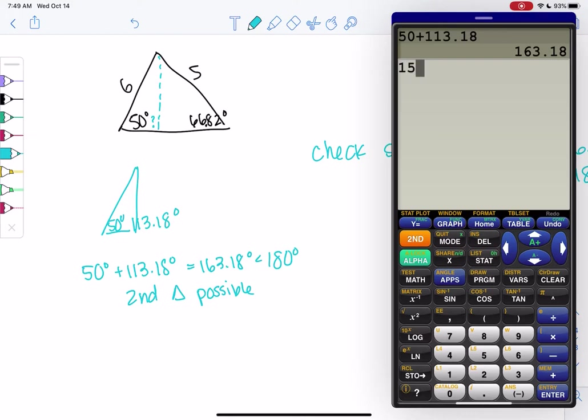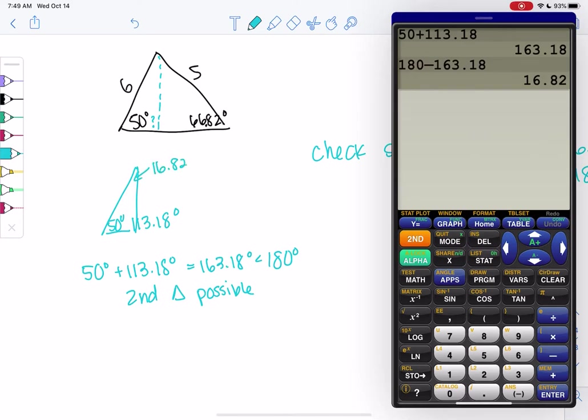And that second angle would, the third angle would be, we might as well just find it while we're here, is 16.82. So in the next example, or one of the next coming examples, we'll see what happens when it doesn't work. But this is what happens when it does work.